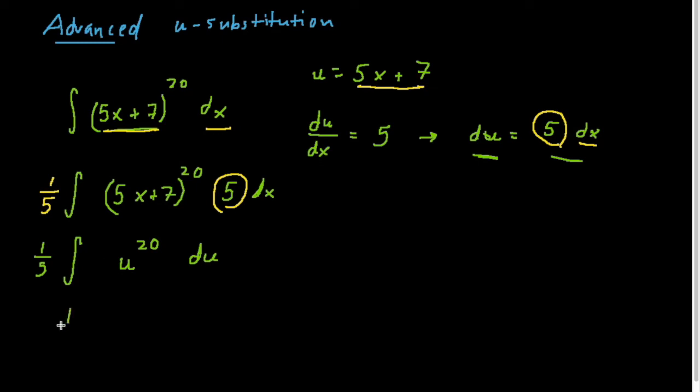Now we'll take the antiderivative: 1/5 times u to the 21 over 21 plus c. And our last step will be just like in the last video. We'll say (5x + 7) to the 21st all over 5 times 21, all over 105, plus c.